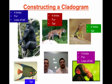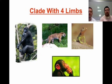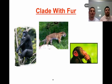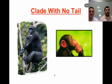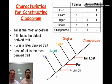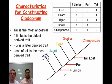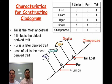Now we're going to construct a cladogram on our own. We have five organisms and several characteristics listed. Four of the five organisms have four limbs, three of them have fur, and only two have no tail. We start from the most ancestral: fish is the loner so it goes at the bottom. The lizard evolved from the fish and gained four limbs, so it came next. The tiger gained fur, so it progressed up. Then the gorilla and chimpanzee both lost their tail, so they grouped together from that point.